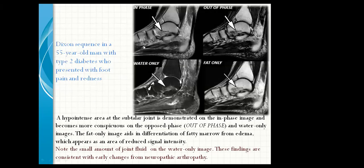This is a Dixon sequence in a 55-year-old man with type 2 diabetes presenting with foot pain and dryness. Hypointense areas at the subtalar region are demonstrated in the in-phase image and become more conspicuous in the out-of-phase and water-only images. The fat-only image is needed to differentiate fat from edema, which appears as an area of reduced signal intensity. Note the small amount of joint fluid on the water-only image; findings are consistent with early changes from neuroarthropathy.